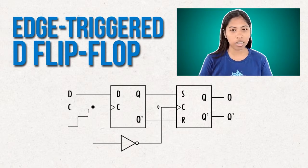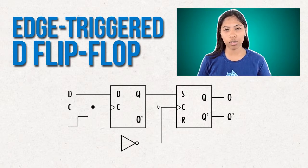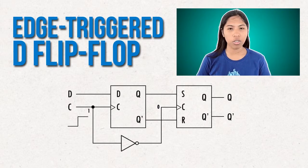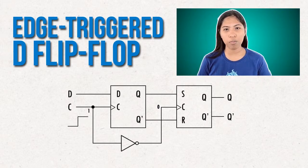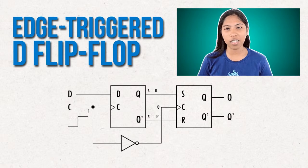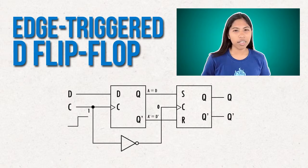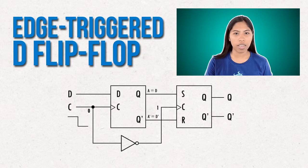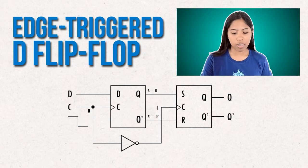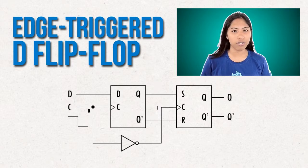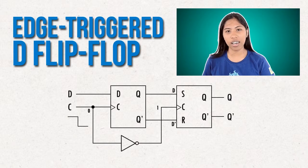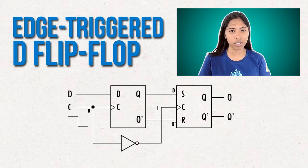The output at Q will get the input value at D. The output will be D and not D. When the negative transition from 1 to 0 takes place, the D-latch is now turned off at the SR gate, and the SR latch is now turned on.